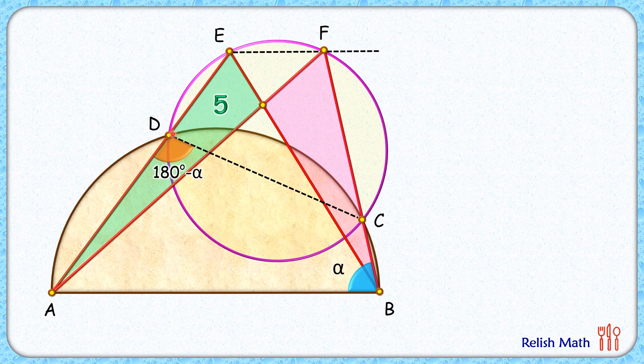Now again, with respect to this pink circle DCFE, it's a cyclic quadrilateral, and thus the exterior angle equals the interior opposite angle. So angle F is 180 minus alpha, and this remaining angle is the same as alpha degree.